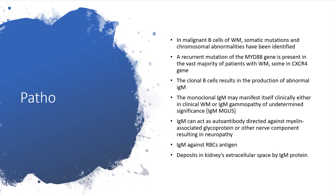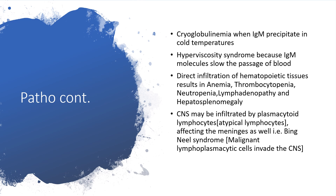The monoclonal IgM may manifest clinically either as Waldenström's macroglobulinemia or as IgM gammopathy of undetermined significance. IgM can act as an autoantibody directed against myelin-associated glycoprotein or other nerve components, resulting in neuropathy. The IgM can also act against red blood cell antigens. Deposition in kidneys and extracellular space by IgM protein is also possible. Cryoglobulinemia can occur when IgM precipitates at cold temperatures.